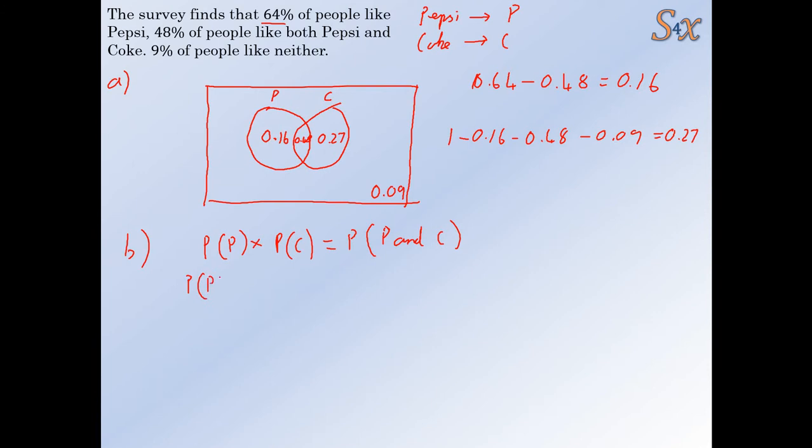Now, the probability of liking Pepsi was given to us in the question. That was 0.64. Well, we could get it from our Venn diagram by adding these two numbers together, 0.16 and 0.48. The probability of liking Coke is the 0.48 who like both plus the 0.27 who just like Coke, which gives us 0.75. Now, the probability, these two multiply together. Well, let's work out the probability of liking Pepsi and Coke. First, we just read that off the Venn diagram. That's 0.48.